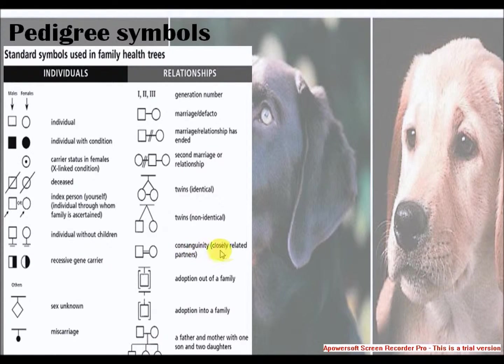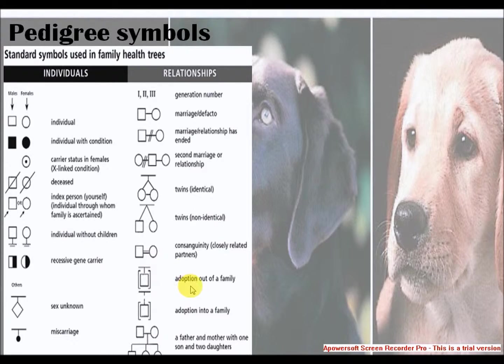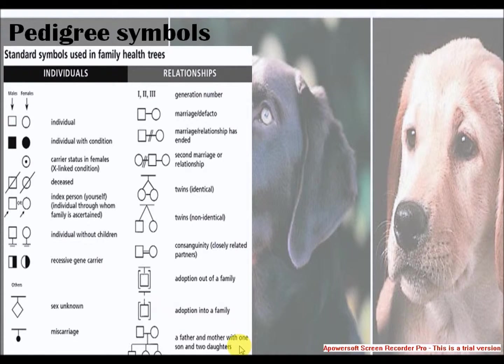Consanguineous or closely related parents and partners, adoption out of a family, adoption into a family, and a father and mother with one son and two daughters.